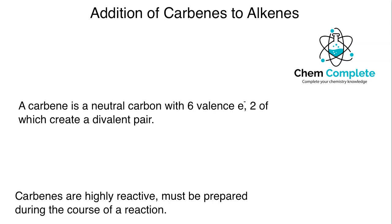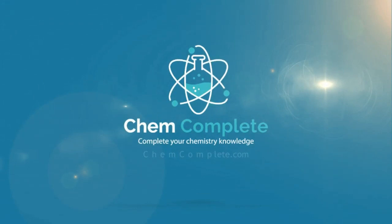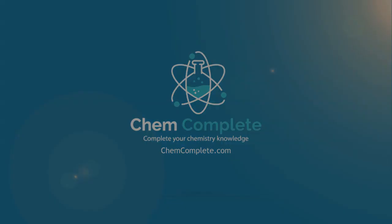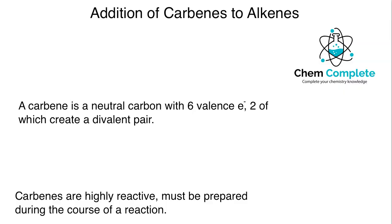We're looking at the addition of carbenes to alkenes, which is going to end up giving us a three-membered ring as the final product, so a cyclopropane. Please remember to head on over to chemcomplete.com for all your learning needs and resources, and we will get started with the reaction of carbenes with alkenes.